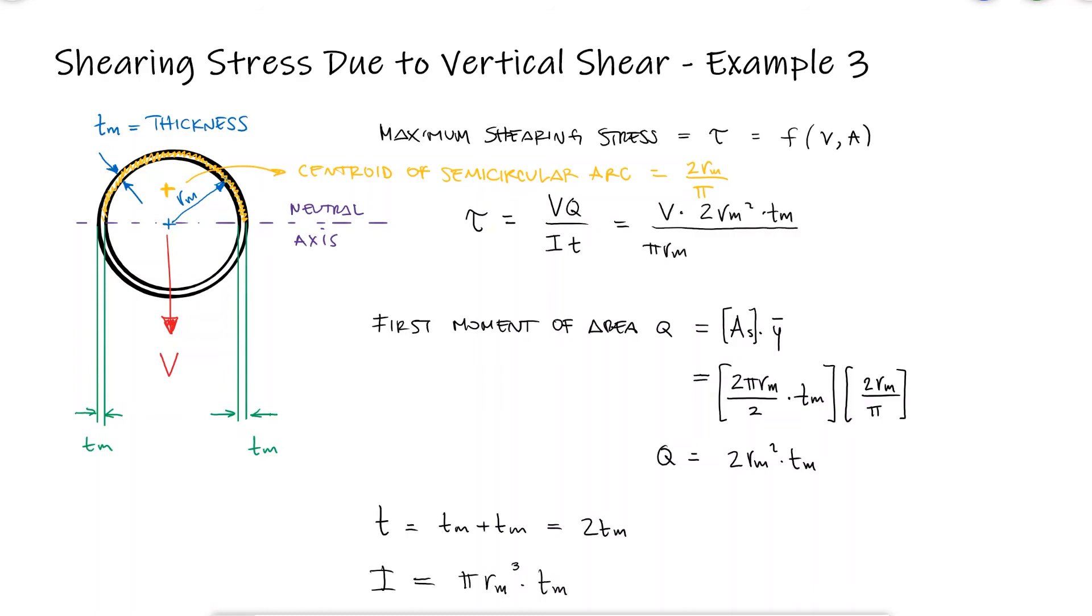Substituting these values, we find the expression for the maximum shearing stress. And once again, identifying that the area is a circumference times the thickness of the cylinder, we see that the maximum shearing stress is 2V over A.